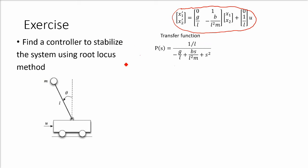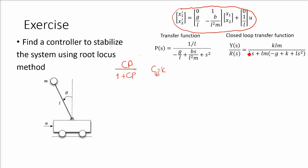If we define our controller as c equals k, using the transfer function of the closed-loop system — cp divided by 1 plus cp — we can get the closed-loop transfer function as a function of k and the parameters of the system. Observe that the denominator has k in it. If we want to get the poles of the system, we want to find the roots of this polynomial, which will be a function of k and the system parameters such as the length of the pendulum, the mass of the pendulum, the gravity term, and the damping term b.